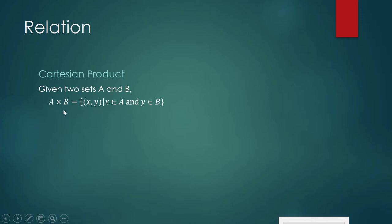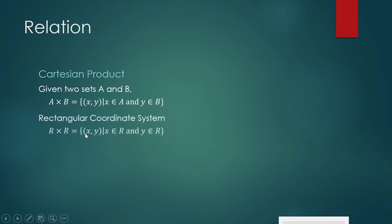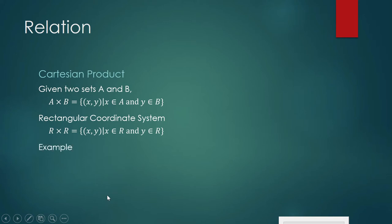The first coordinate must always come from set A and the second coordinate must come from set B. Your rectangular coordinate system is an example of a cross product, wherein your ordered pairs are actually the coordinates of a point in your plane. Since x is a real number and y is a real number, your rectangular coordinate system is R cross R.